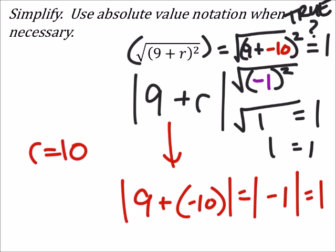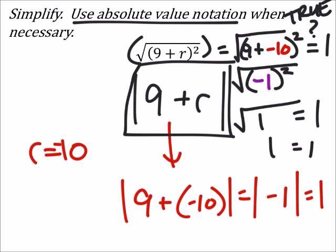That was just to demonstrate why we can write it as the absolute value. I don't know if that's helpful or not. Yeah, the absolute value of 9 plus r is the answer, which uses that absolute value notation like it asks. Thank you.